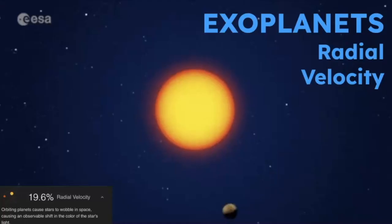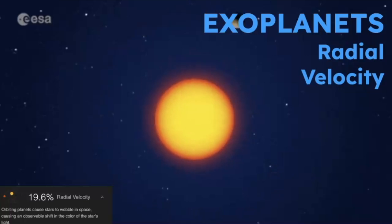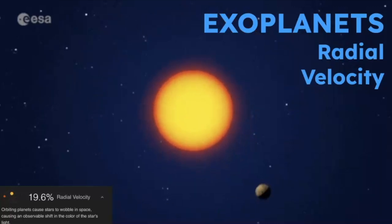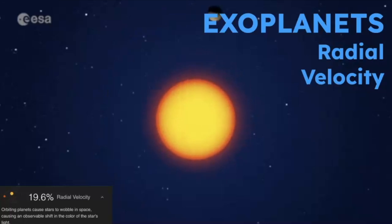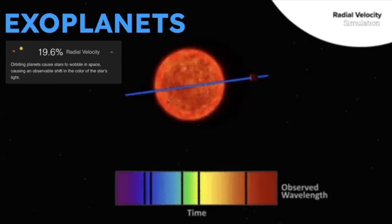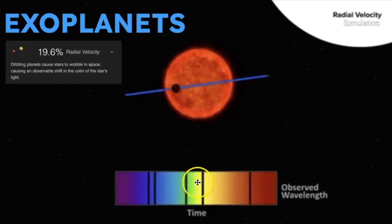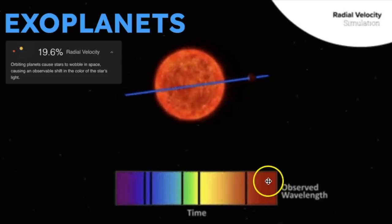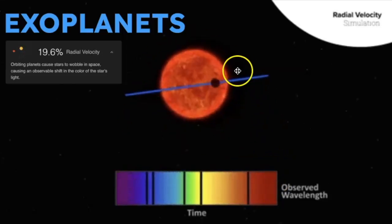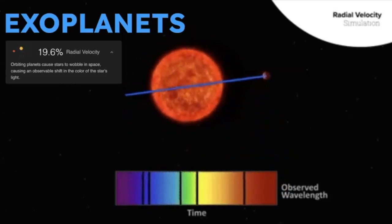The next way is through radial velocity. As you watch this animation, notice how the star sort of wobbles side to side — that's because of the gravitational influence of the planet going around it. What astronomers see from their perspective is a shift in the star's spectrum, and that's one way we can detect exoplanets.